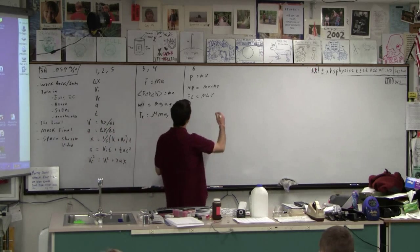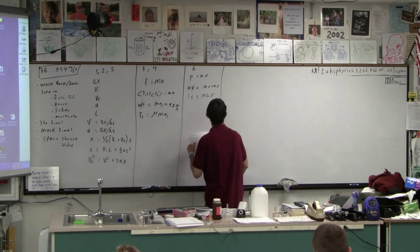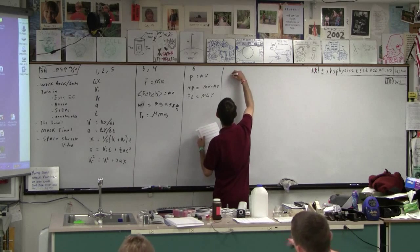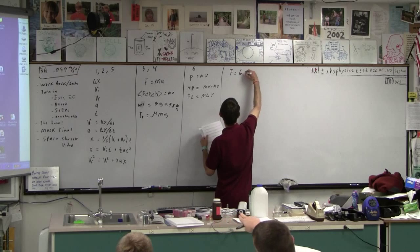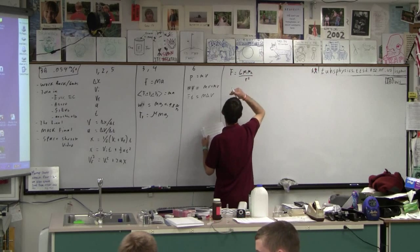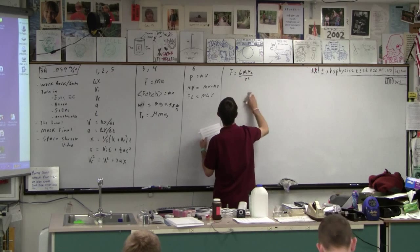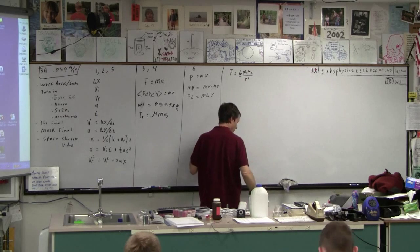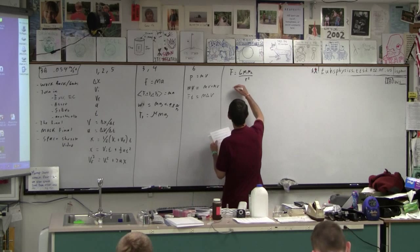And then 7 is, you've got to do the force of gravity, right? M1, M2 over R squared. And then there's all those formulas for, like, orbit problems that we should know, right?